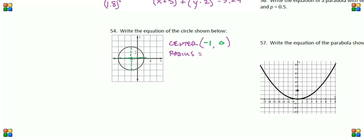The radius, all we got to do is count either up, left, right, or down. We can see our radius is two units, so our radius is equal to two.